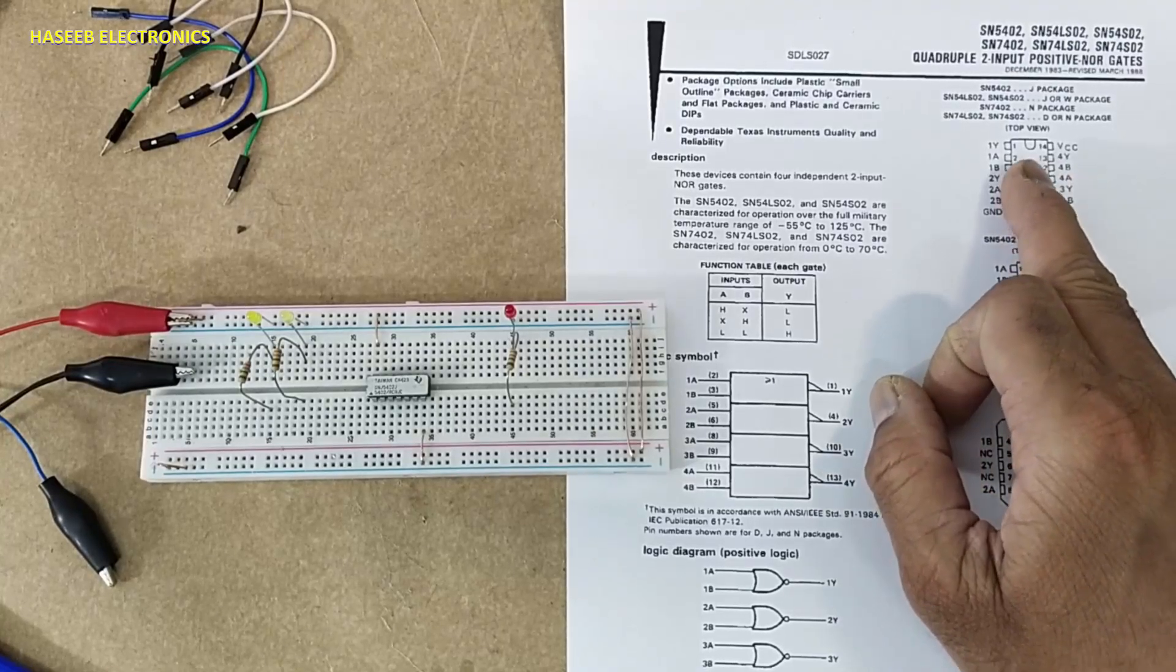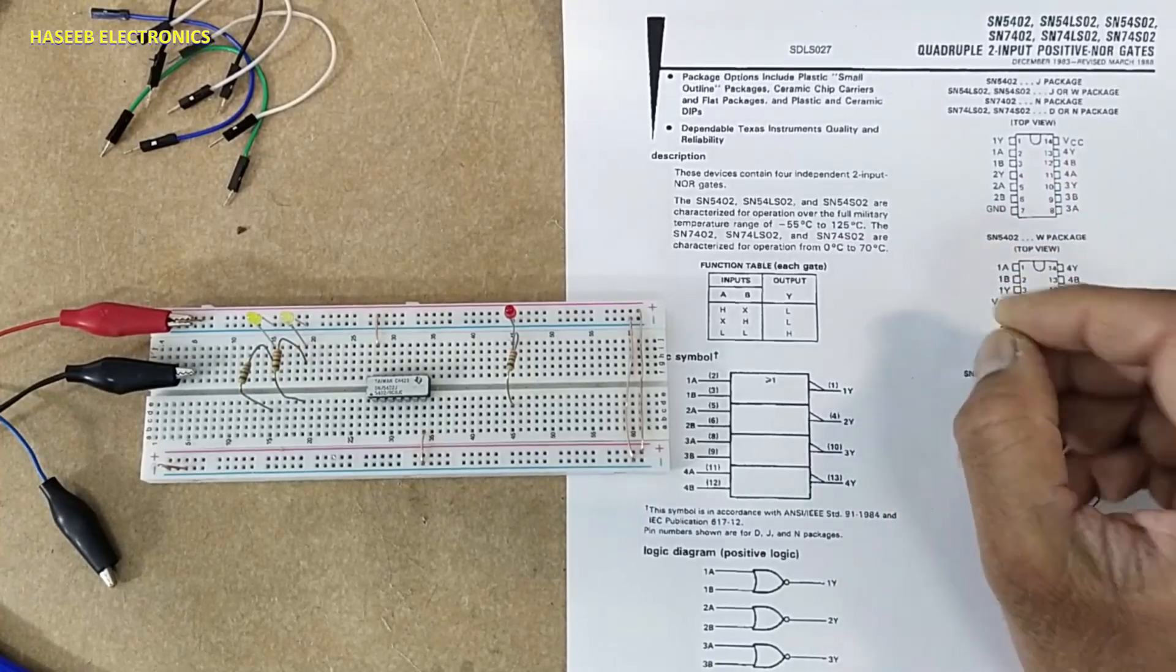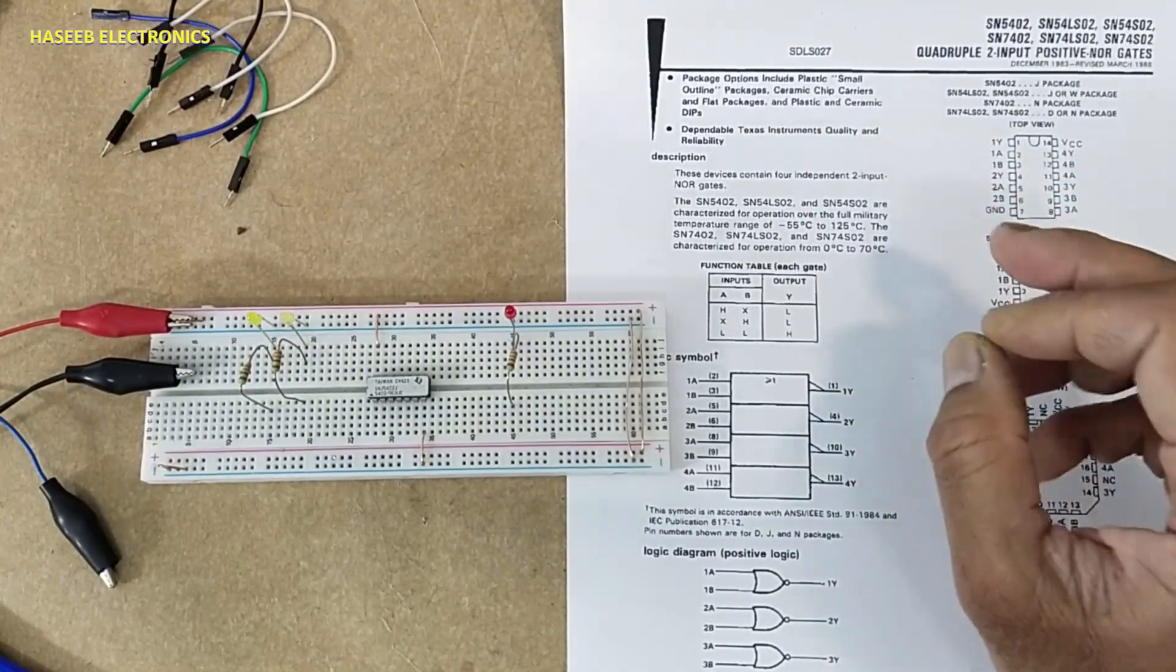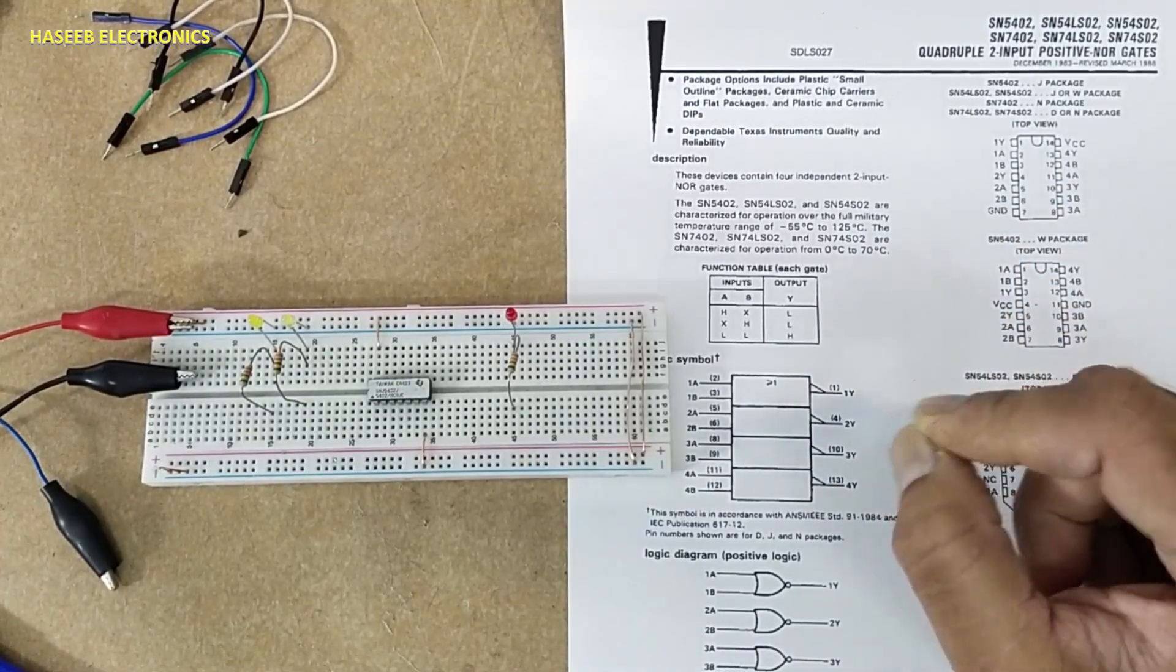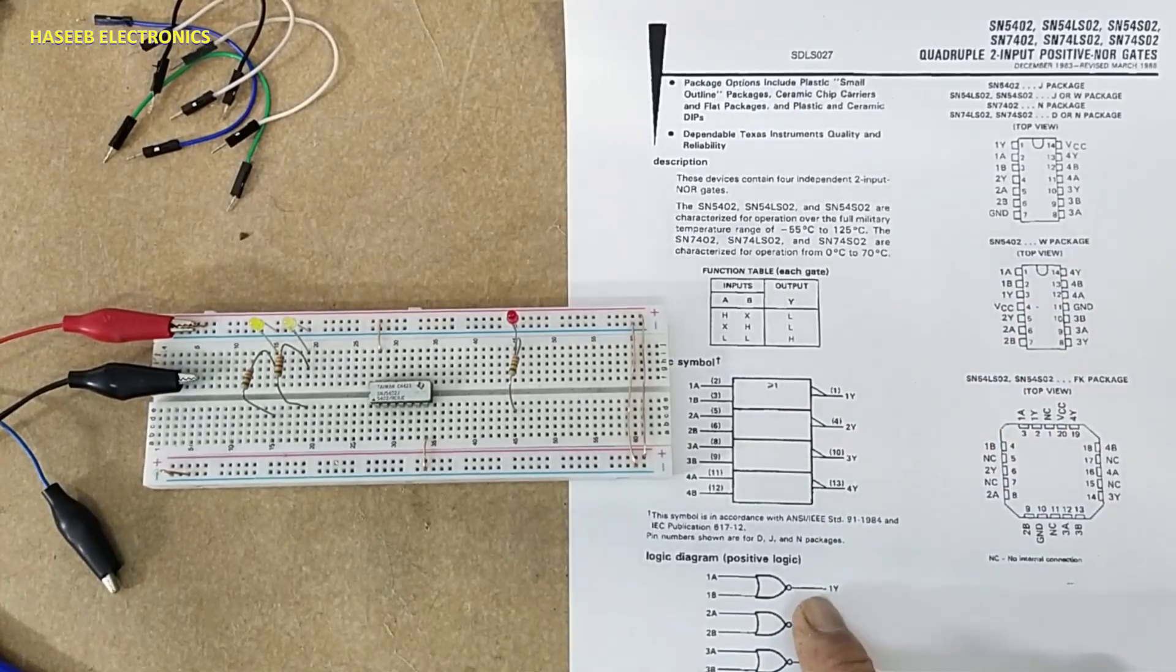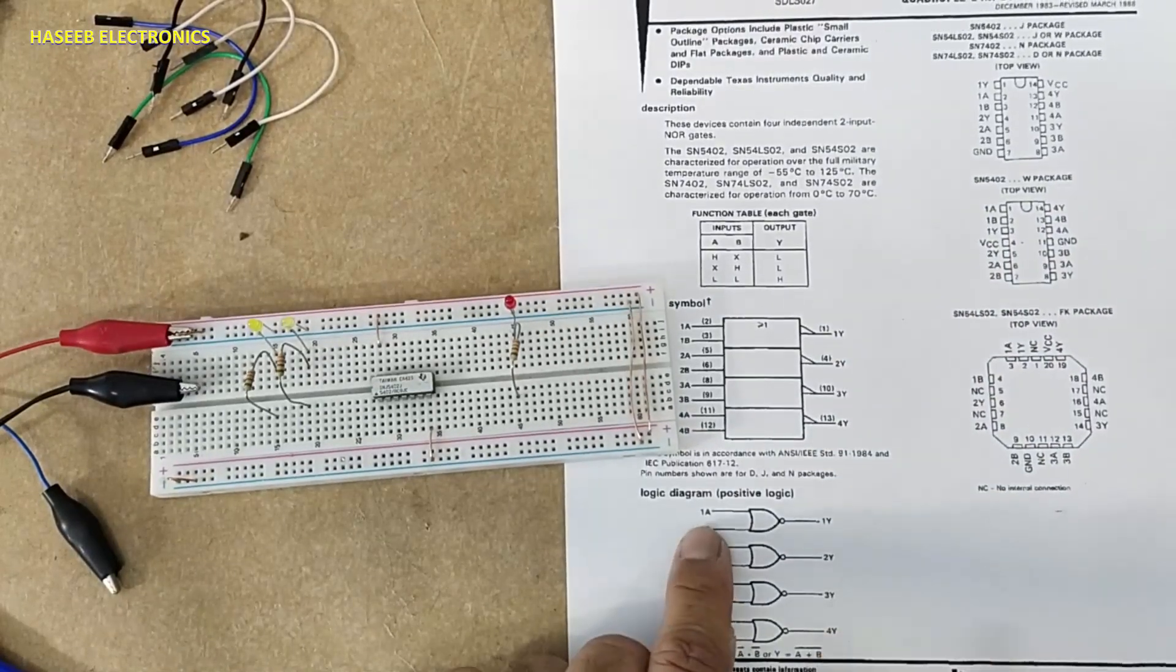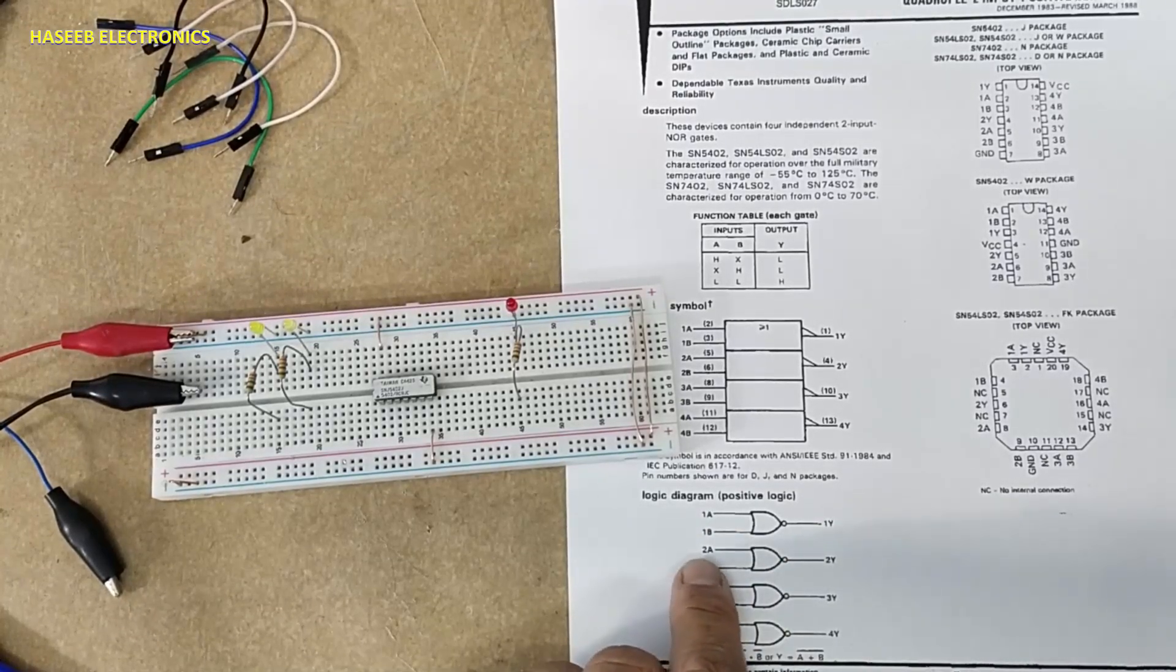Pin numbers eleven and twelve are input for fourth gate. Pin number thirteen is output for fourth gate. Pin number fourteen is VCC, 5 volts nominal, 4.75 to 5.25. Here is the logic symbol: one A, one B, one Y output. Second gate: two A, two B, two Y output. Three A, three B, three Y output.